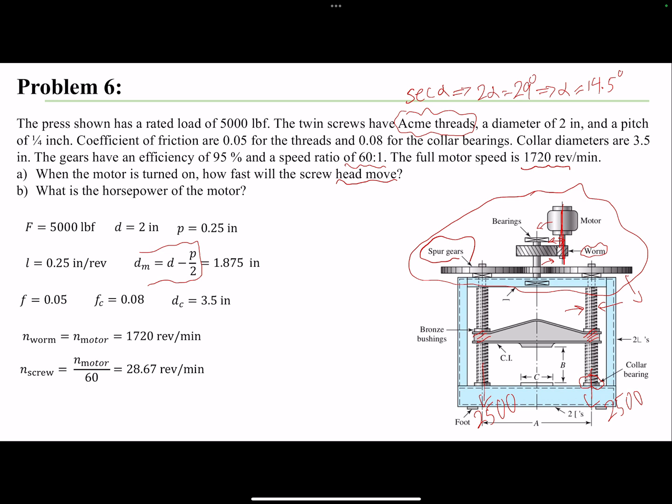But the problem is asking for the velocity. So the velocity would be the RPM times lead. The RPM tells us revolution per minute, and the lead will tell us how far we go per revolution. So if we cross out the revolution, I can find inch per minute, and that's what we need for the velocity.